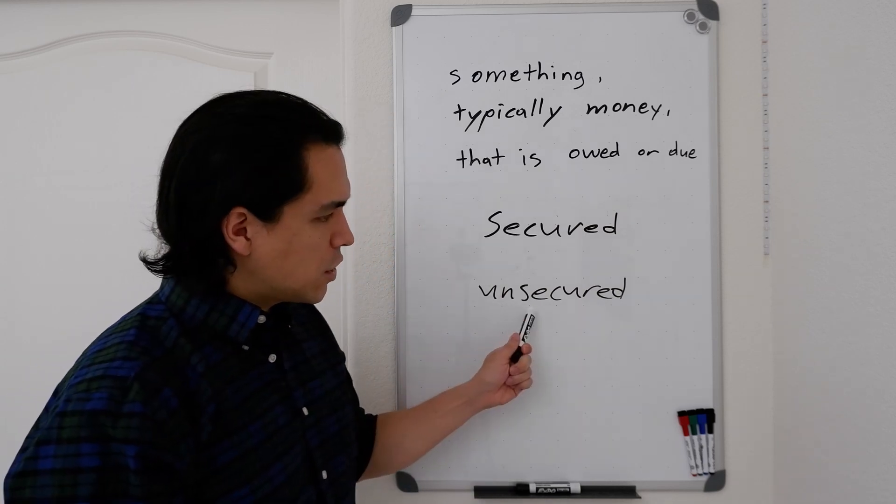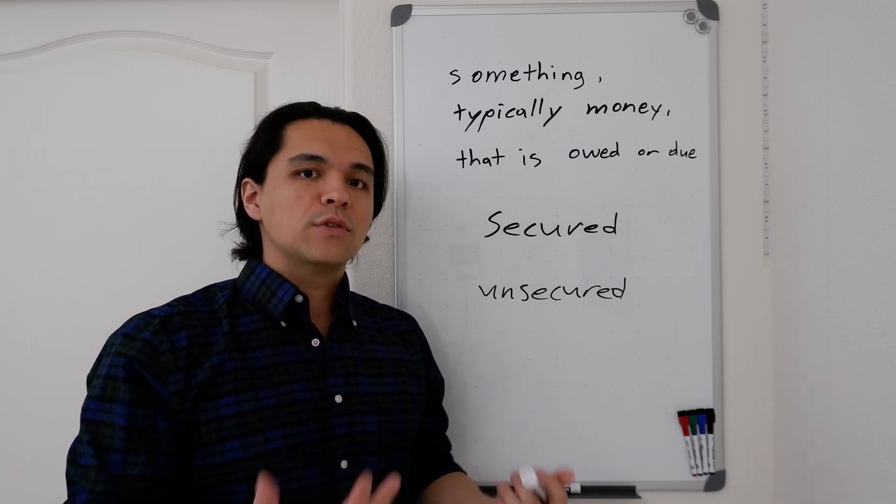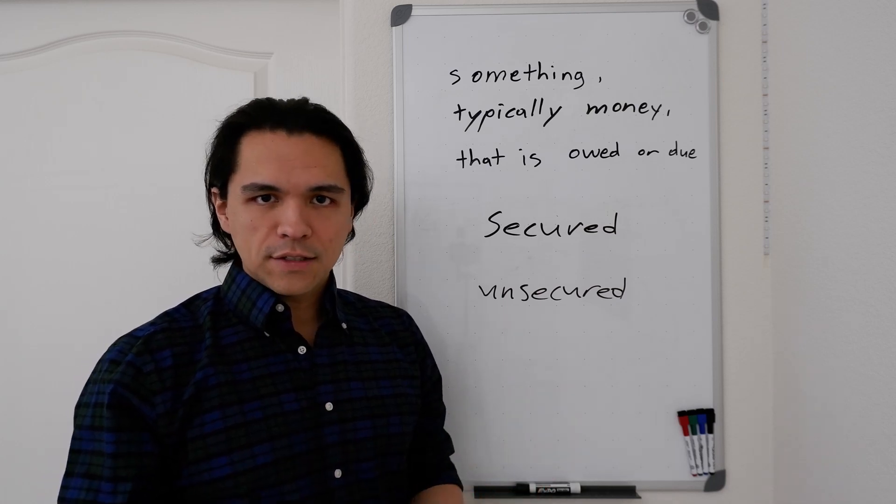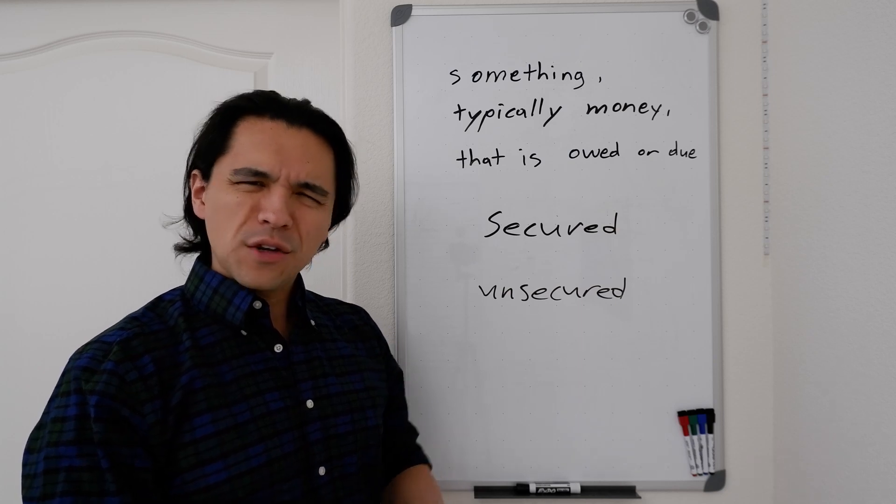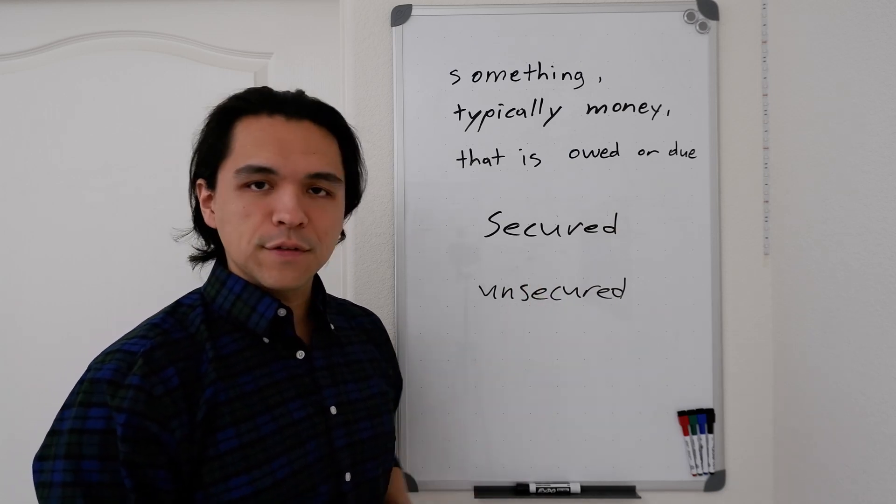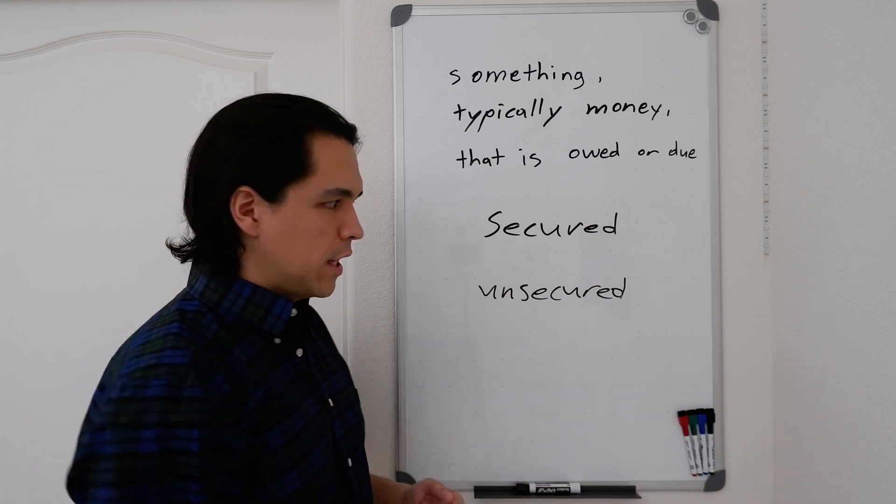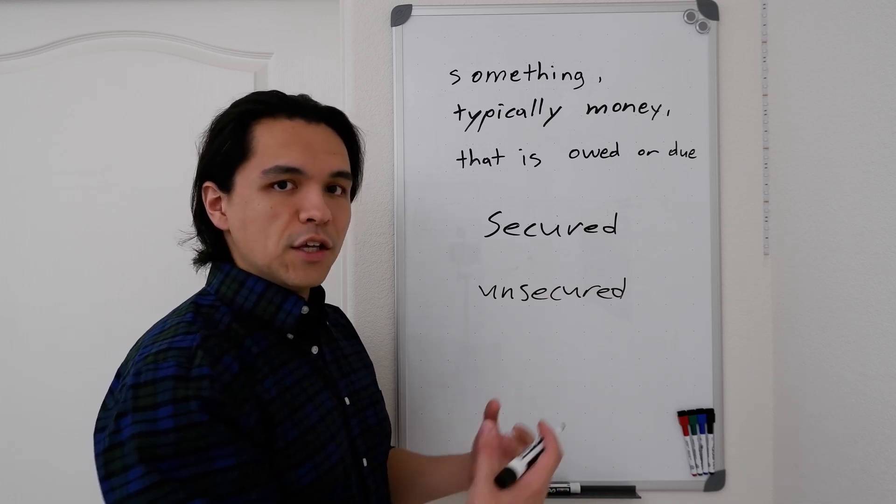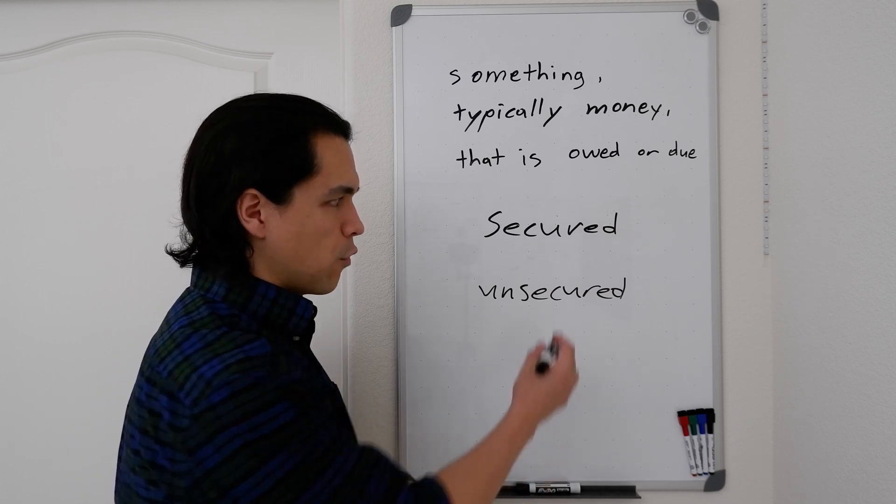Now on an unsecured loan, you're going to find no collateral. There's no security. So because of that, the bank or lending institution is typically going to charge a higher rate here. So if you think about this, it kind of makes sense. In a secured loan, if you have something backing up that loan liability, then you can charge a lower rate because you feel secure as a bank that you will get your money back one way or another in some way, shape, or form.